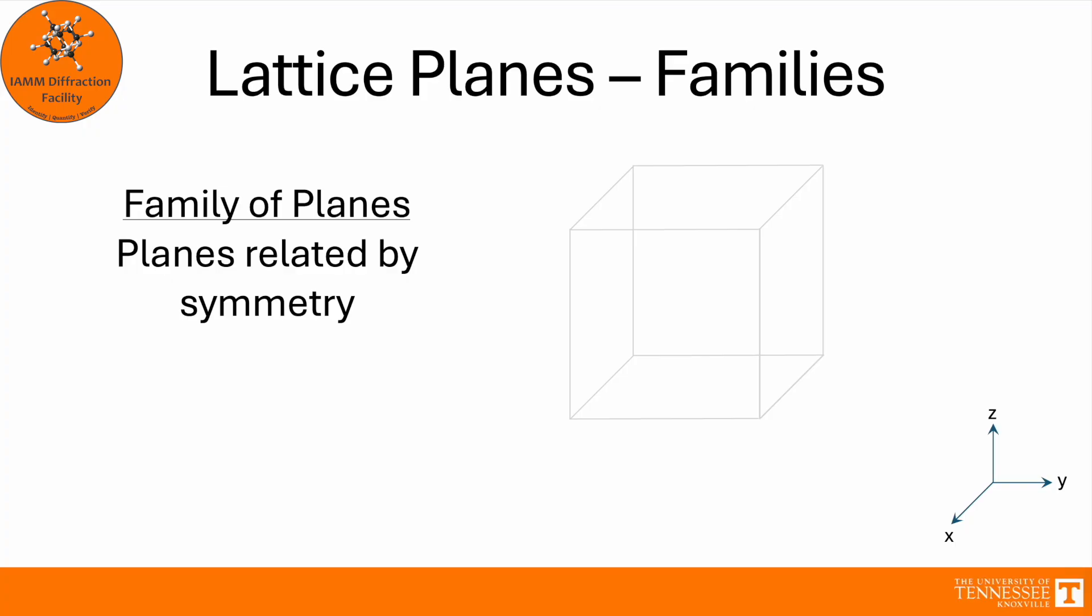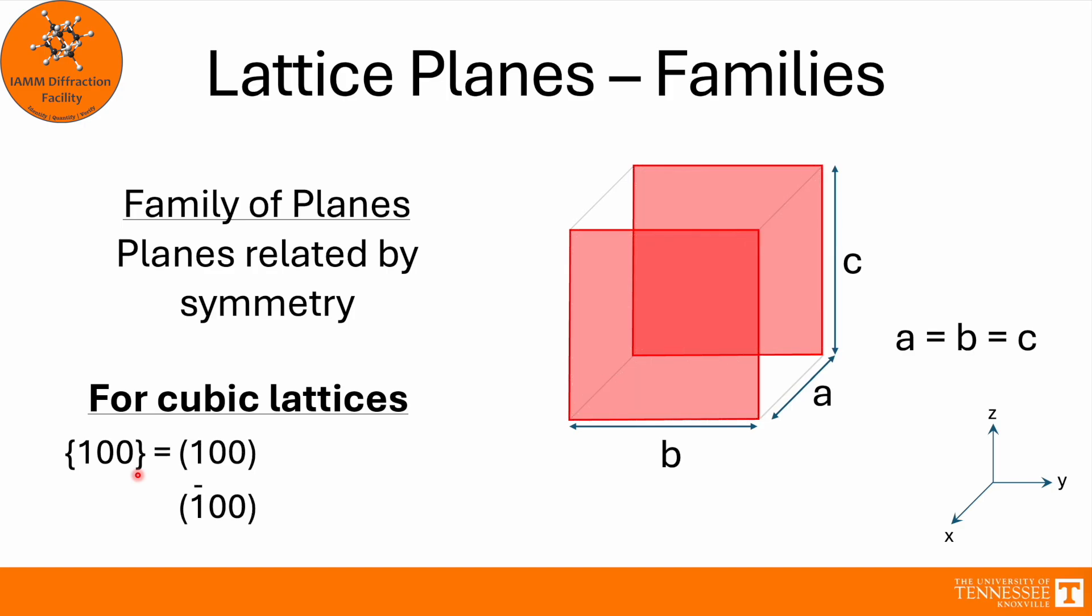Now, just like with directions, we can have families of planes, and these are planes that are related by symmetry. For cubic lattices, where a equals b equals c, if we are looking for the {1,0,0} family of planes, which is designated by these types of brackets, we see that the (1,0,0) planes, both positive and negative, equal the (0,1,0) planes, and also equal the (0,0,1) planes by symmetry. All of our distances are the same. So these six planes make up the {1,0,0} family of planes for the cubic system.